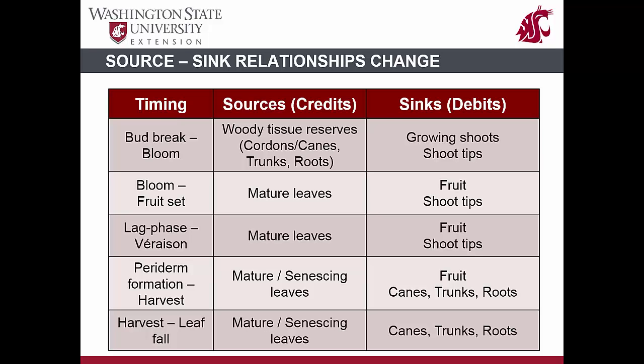From periderm formation, or the browning of shoots, up to harvest, the mature leaves are the dominant energy source, and fruit are still the dominant energy sink. In addition, during this time, energy is starting to be diverted to woody storage organs and roots for overwintering. From harvest until leaf fall, the major energy sources are the remaining leaves. The energy sinks are the woody storage organs and roots.